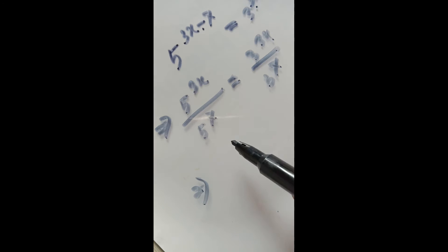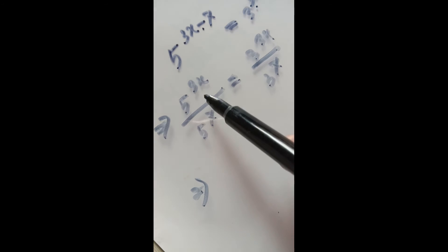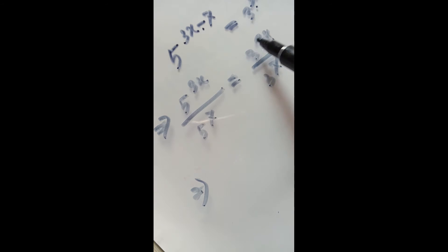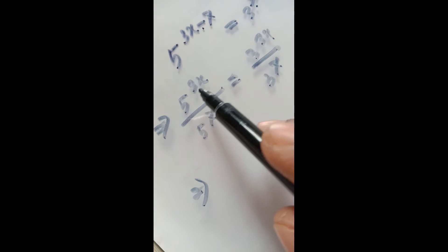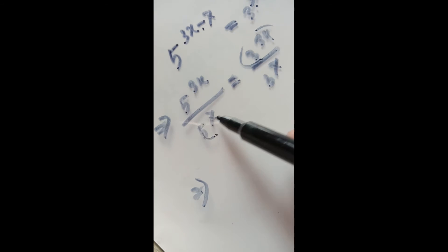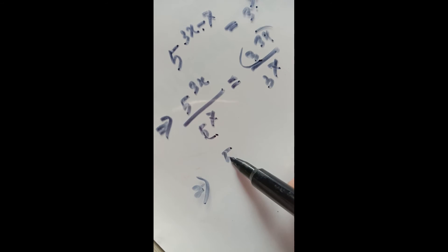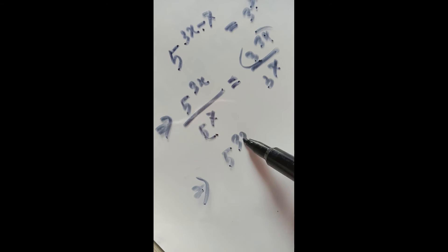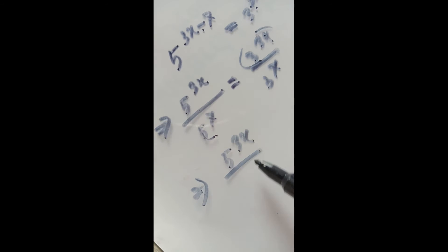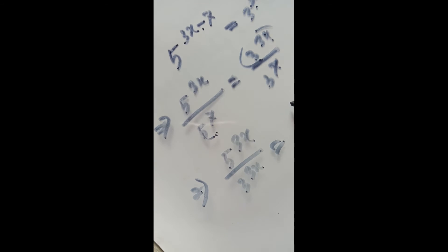We rearrange terms: 5 to the power 3x divided by 3 to the power 3x, and transfer 5 to the power 7 and 3 to the power 7 to the other side.